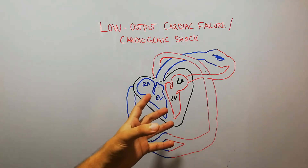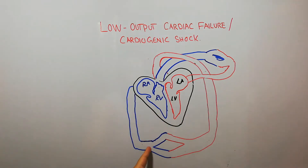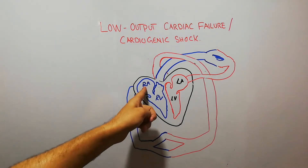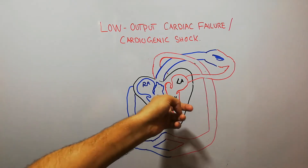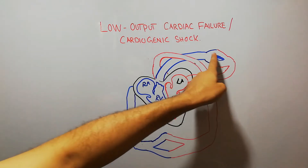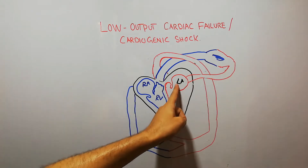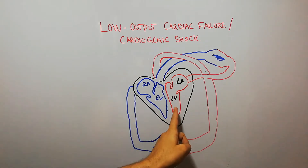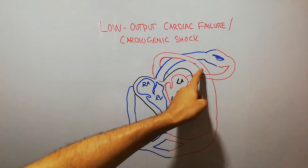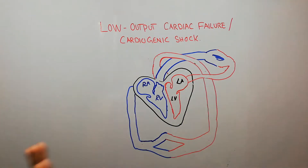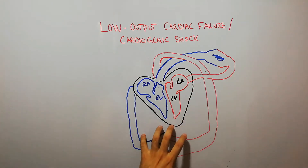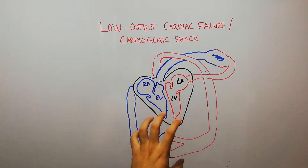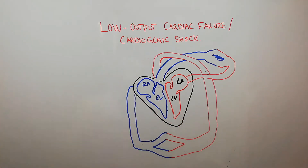Normally in the human heart, blood comes from the body through different veins to the right atrium, then into the right ventricle, then into the lungs where it gets oxygenated. It returns to the left atrium, then into the left ventricle, and from the left ventricle blood goes through the aorta into the human body, supplying nutrients to different cells, tissues, and organs.